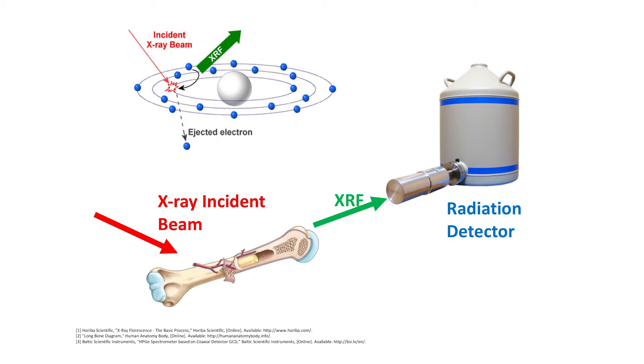This energy, called the XRF photon or fluorescence photon, will again travel in space until it reaches the third component of the system, which is the radiation detector.